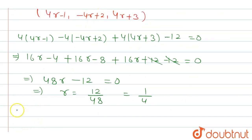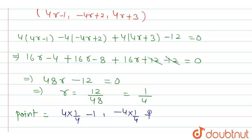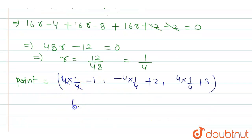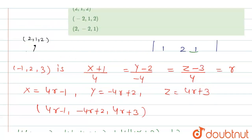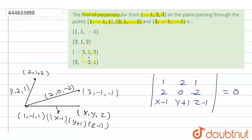Substituting r = 1/4 back into the parametric equations: x = 4·(1/4) - 1 = 1 - 1 = 0; y = -4·(1/4) + 2 = -1 + 2 = 1; z = 4·(1/4) + 3 = 1 + 3 = 4. So the required foot of perpendicular is (0, 1, 4). Comparing with the given options, none of the options match, so the answer is 'none of these'.